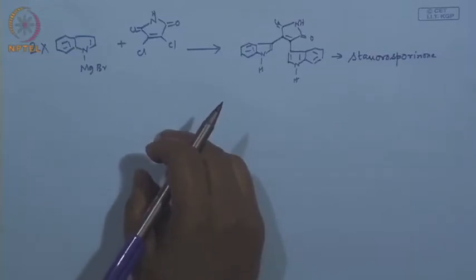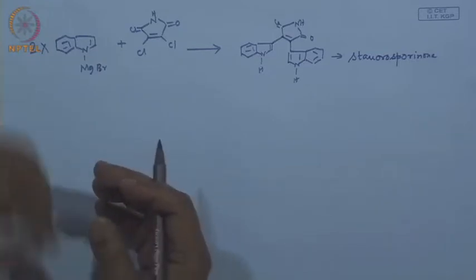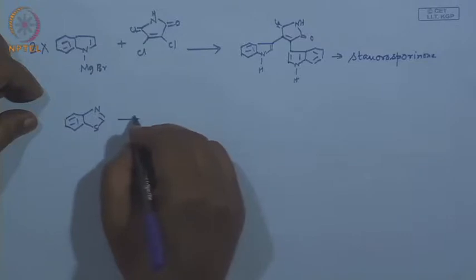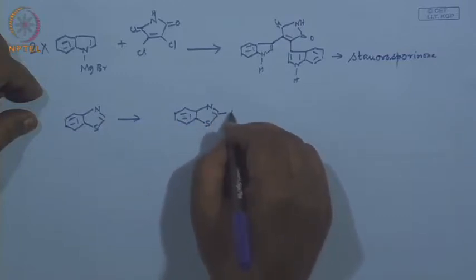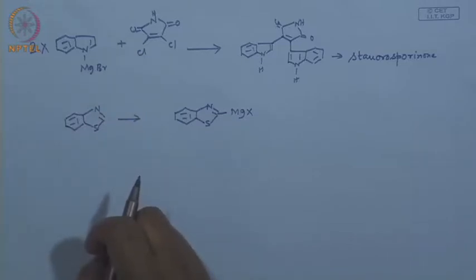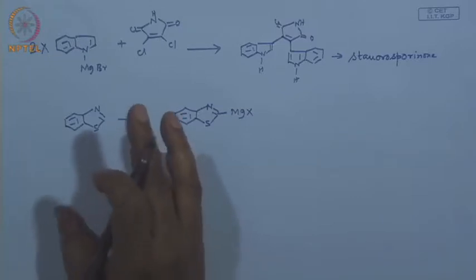Now let us say what next. We restrict our examples to organomagnesium and five-membered rings. For example, if you are to make a benzothiazole organomagnesium compound, what reagent would you choose? For the generation of organomagnesium, the methods are deprotonation, halogen exchange, and transmetallation. We have already seen that five-membered heterocycles with active hydrogen can be deprotonated with lithium reagents, so you can do transmetallation.